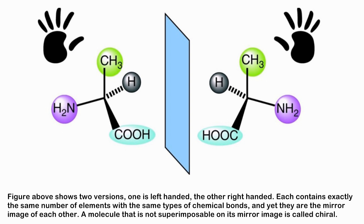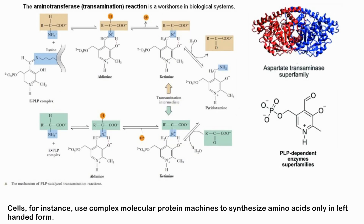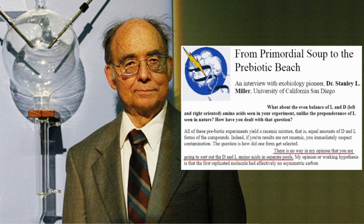Two versions exist: one is left-handed, the other right-handed. Each contains exactly the same number and types of chemical bonds, yet they are mirror images of each other. A molecule not superimposable on its mirror image is called chiral. In proteins, only left-handed amino acids can be incorporated. Cells use complex molecular protein machines to synthesize amino acids only in left-handed form. In nature, however, amino acids exist in chiral form — both left and right-handed — and there was no mechanism to sort them out on early Earth.